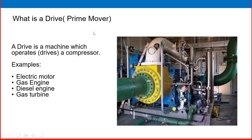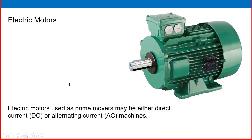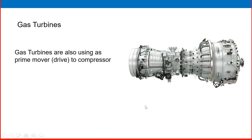What is a drive? A prime mover is required to drive the compressor, giving it power and energy. A drive is a machine which operates and drives a compressor. Examples include electric motor, gas engine, diesel engine, and gas turbine. Most common are electric motors, which may be either direct current or alternating current. Gas turbines are also used as drivers for compressors.